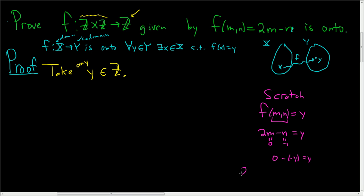We can check: if you have 2M minus N, and we're taking M equals 0, N equals negative y, we get 2 times 0 minus negative y. Looks like it works. So that's going to be our choice for our pair.